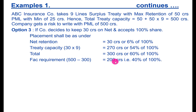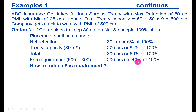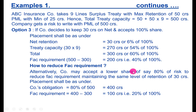The FACA requirement comes to 200 crores, that is 40 percent of 100 percent — which is very high. To reduce it, the company may accept a lower share. If you maintain 30 crores retention and reduce your share to 80 percent, liability reduces to 400 crores. Since 300 crores is already placed, the balance is 100 crores (20 percent), so FACA is reduced to 20 percent.